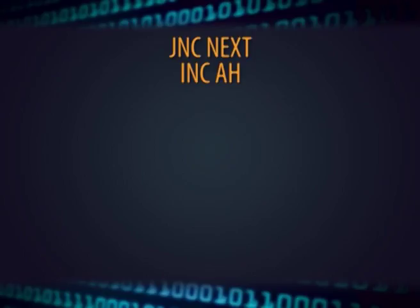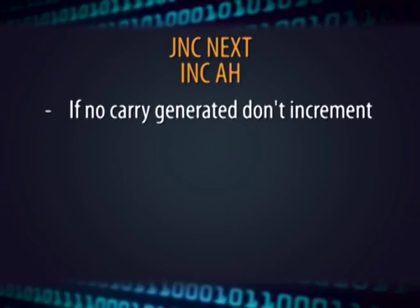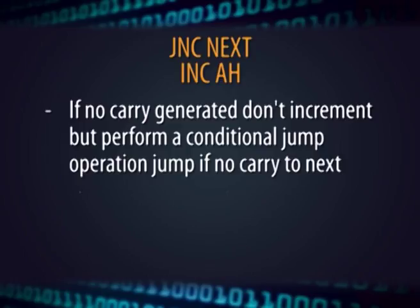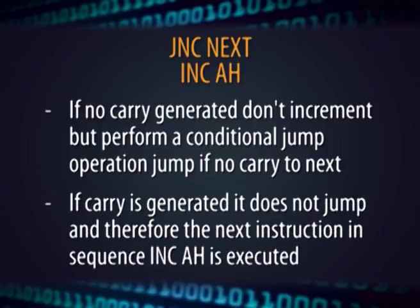This is accomplished by the following instruction sequence: we write JNC (jump if no carry) to 'next', and then INC AH. That means if no carry is generated, do not increment and perform a conditional jump to 'next'. But if a carry is generated, JNC results in false and therefore does not jump. The next instruction INC AH is executed, resulting in the increment of register AH by 1, as per the program logic explained earlier.